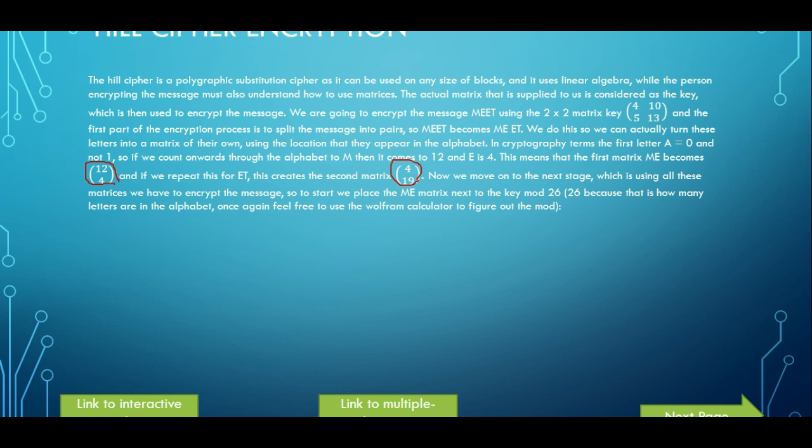Right here then we move on to the next stage which uses all the matrices that we have, the key and the tool, to encrypt the message. So first we encrypt ME and we do it modulus 26, and it's mod 26 because there are 26 letters in the alphabet.